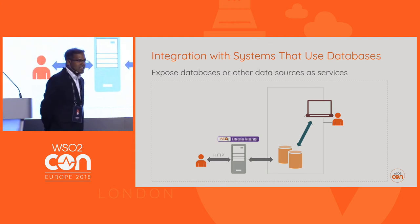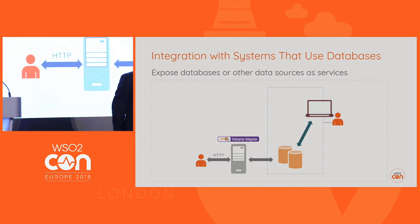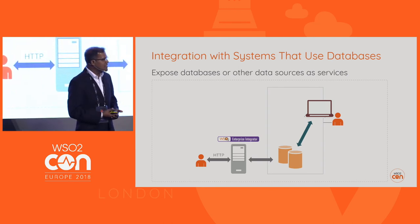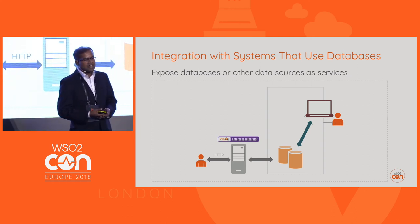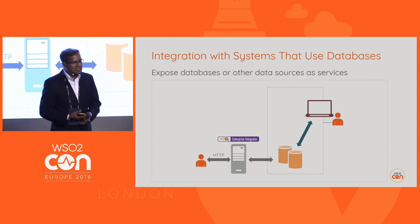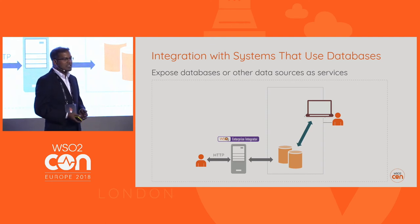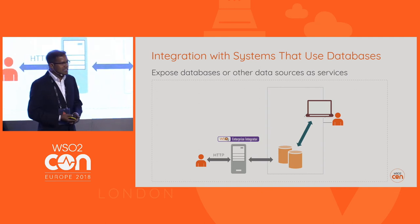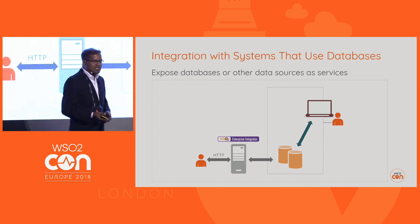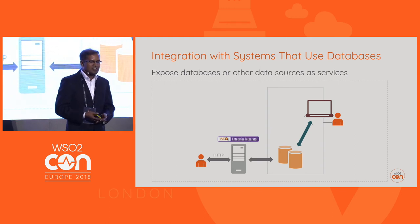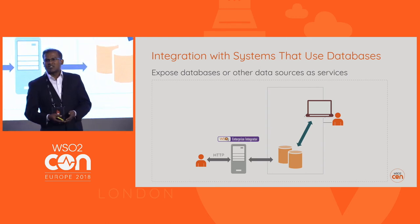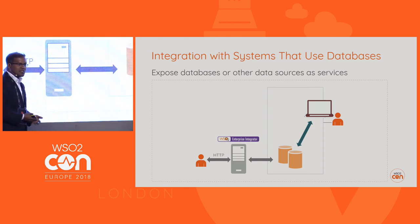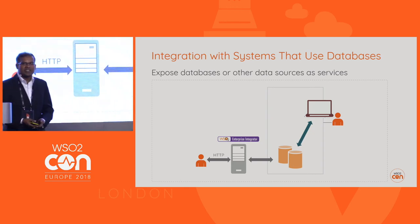Finally, there is the scenario where there are no extension points, so we want to integrate via the data store used by the legacy system. Here we can use the data integration capability provided by the Integrator Runtime to construct REST or SOAP services based on the data in the data store, and then use any of the protocols to consume that data and integrate with other systems.